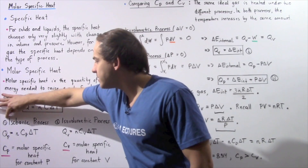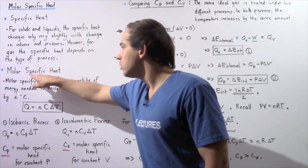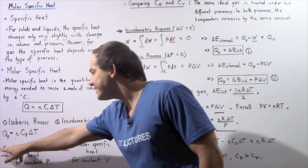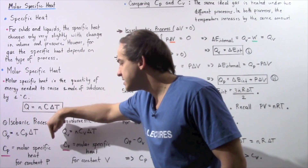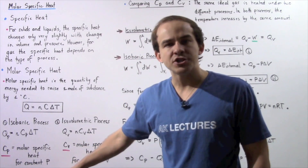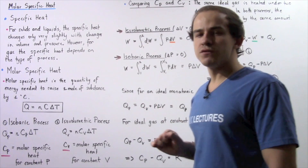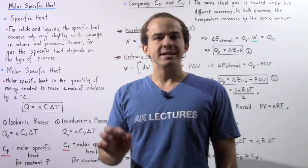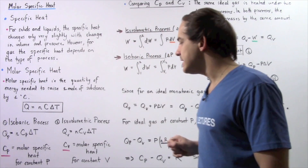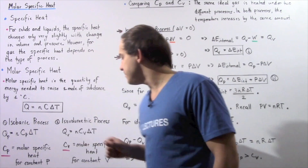For example, let's suppose we have an isobaric process. In an isobaric process, our molar-specific heat is given by Cp — the molar-specific heat for a process in which there is constant pressure. And let's suppose we have an isovolumetric process. In an isovolumetric process, the volume remains constant, so our value for molar-specific heat Cv will be different than Cp.